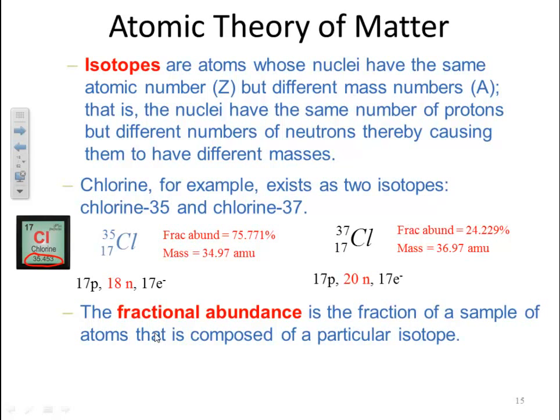Hence, the weighted average is going to be closer to that 35 weight than it is to 37. How do you calculate that? Well, it's just a mathematical equation. You take your fractional abundance in its decimal form, times its mass of that isotope, and you sum all the different isotopes.